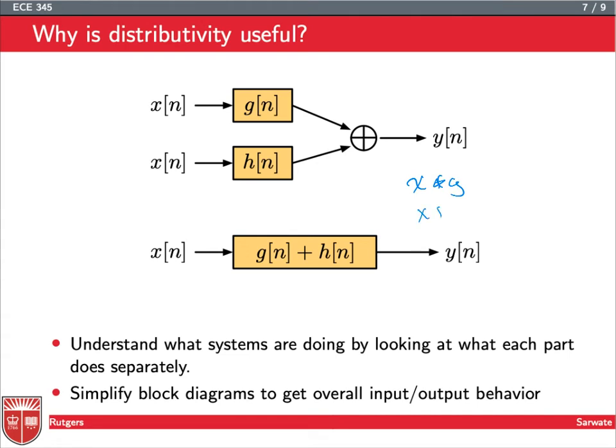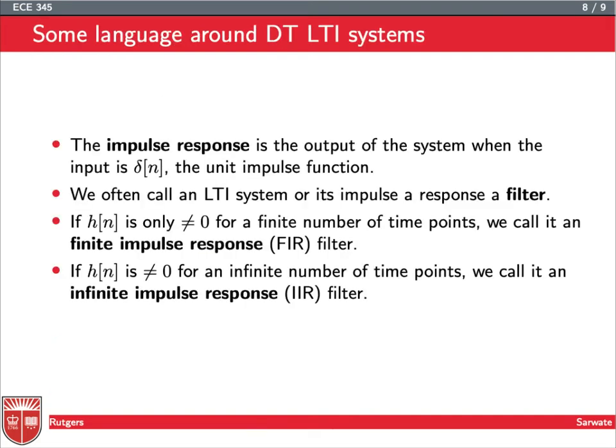Right, so that sometimes makes your life easier in terms of algebra. And it also lets you simplify block diagrams to understand kind of the overall input output behavior. So we want to understand a little bit of language that we use around discrete time LTI systems. So the impulse response is the output of the system when the input is delta[n], the unit impulse function, hence the name impulse response. So everything is in the name, really. It's the impulse response, it's the response of the system to the unit impulse. And as I've said multiple times now, we call LTI systems or the impulse response, or its impulse response a filter.